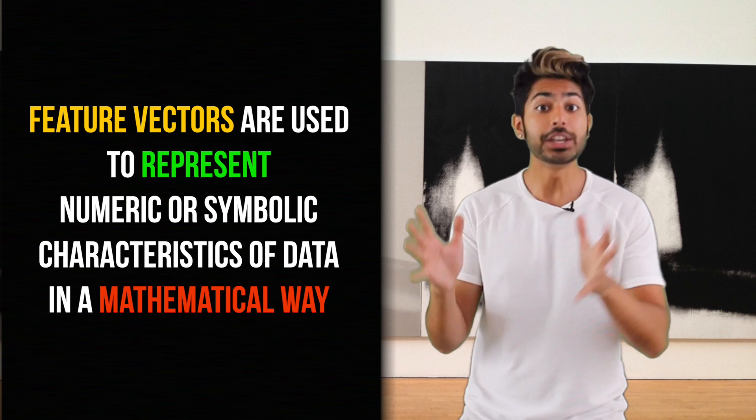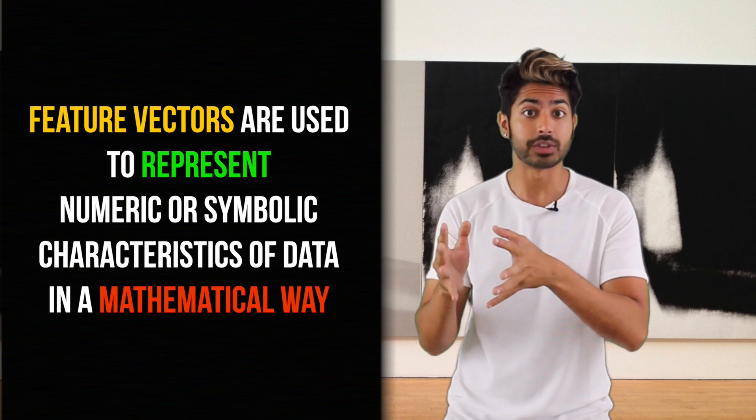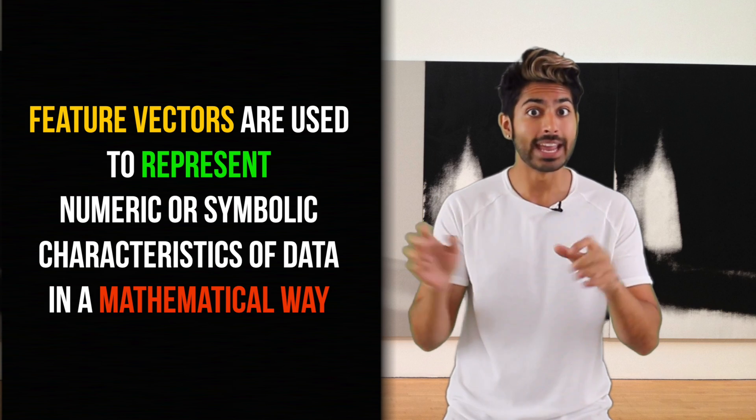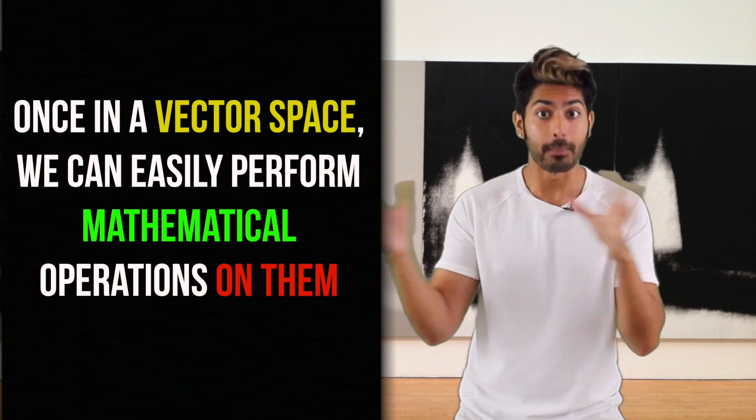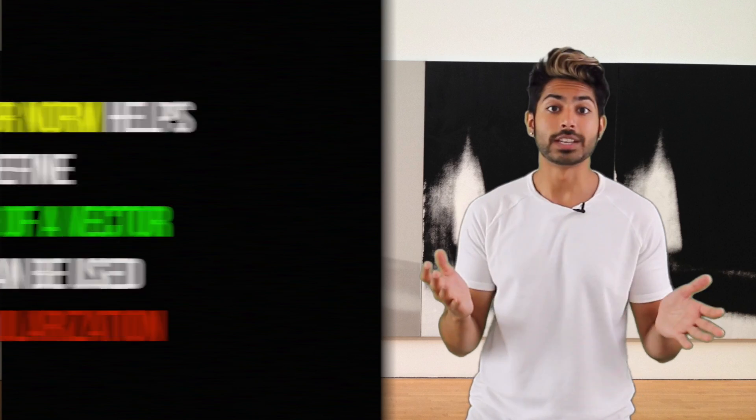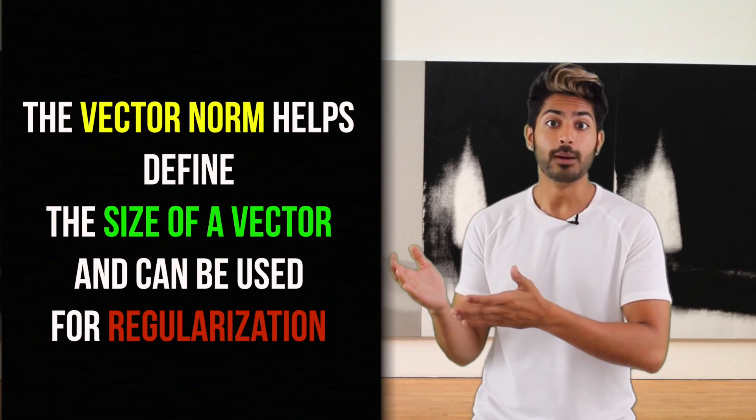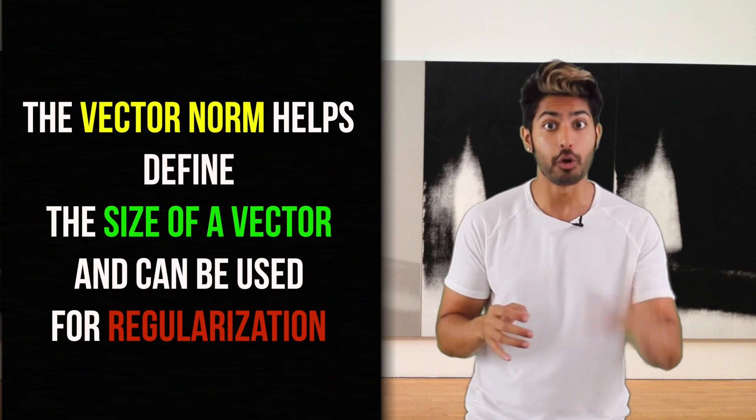To sum things up, feature vectors are used to represent numeric or symbolic characteristics of data called features in a mathematical way. They can be represented in multi-dimensional vector spaces where we can perform operations on them like computing their distance and adding them. And we can do this by computing the vector norm which describes the size of a vector. Also useful for preventing overfitting.